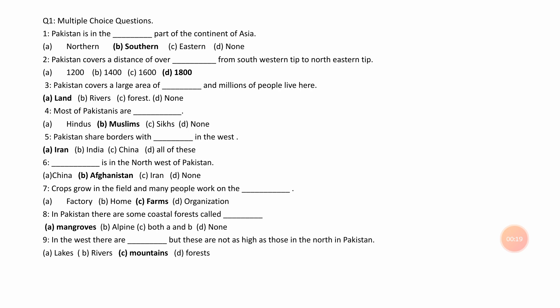Number 2. Pakistan covers the distance of ___ from southwestern tip to northeastern tip. A. 1200, B. 1400, C. 1600, D. 1800. Answer is D. 1800.